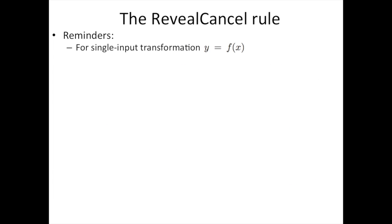Let's dive into the specifics of the reveal-cancel rule. As a reminder, this rule applies to single input transformations of the form y equals f of x. To recap, the rescale rule sets delta y plus and delta y minus proportional to delta x plus and delta x minus, with a constant of proportionality equal to delta y divided by delta x. Here, delta x plus is the lump sum of incoming positive terms, and delta x minus is the lump sum of incoming negative terms.